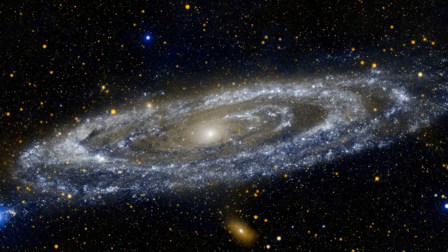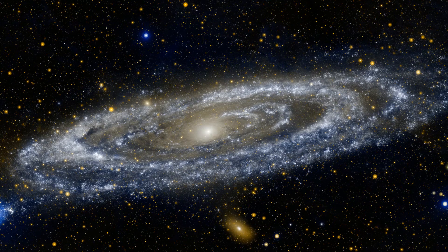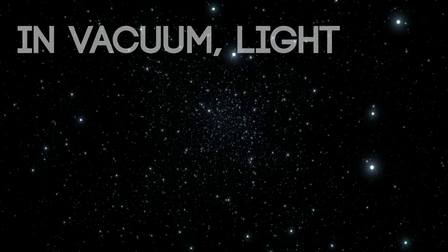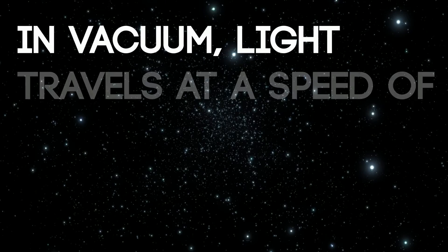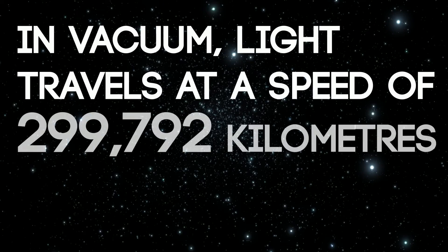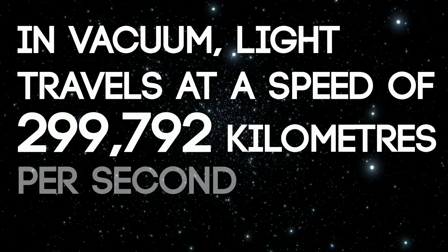Let's get to the basic principle. To be precise, in vacuum, light travels at a speed of 2,99,792 km per second.